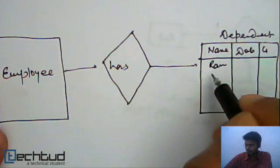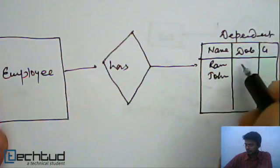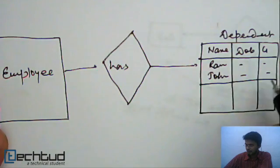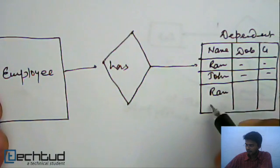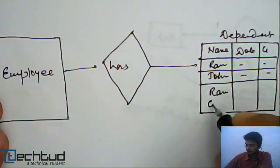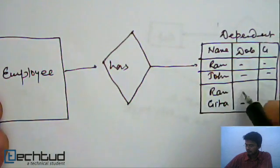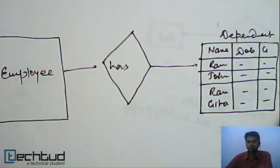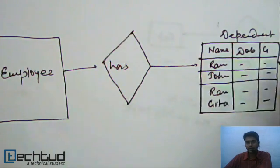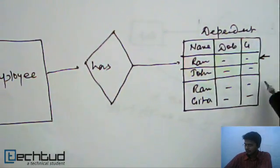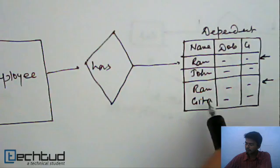Consider two dependents: Ram and John with some data, and another one is Ram and Gita with some data. What we are assuming here is that two dependents of different employees may have all the attributes the same — for example, these two have all the attributes the same.